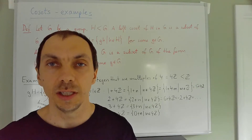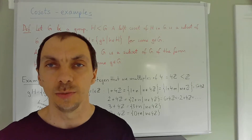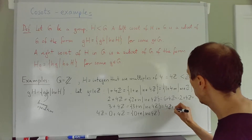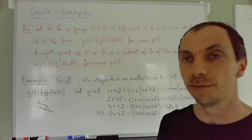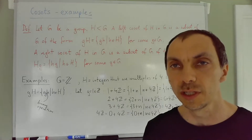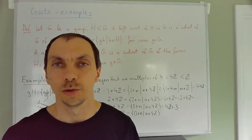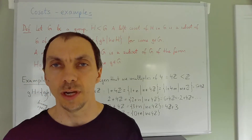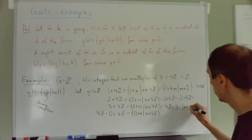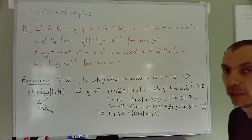These are the left cosets of 4Z inside Z. What about right cosets? In this case there's no difference because addition is commutative. Right cosets will be the same as left cosets. For example, 3 + 4Z is the same as 4Z + 3. When the group G is abelian, left cosets and right cosets are the same thing.